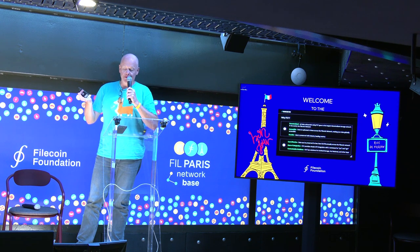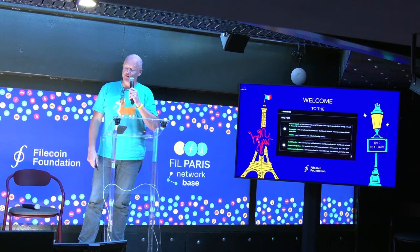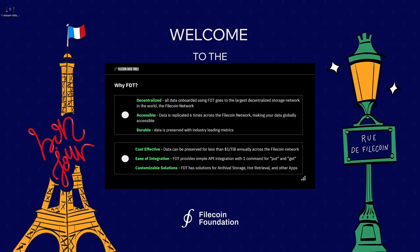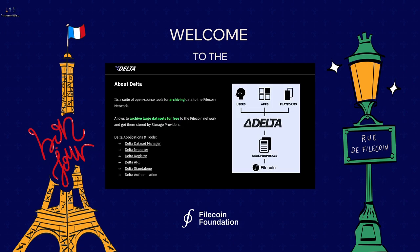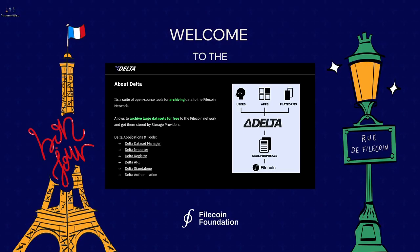Why would we go this route? We want a decentralized, accessible, durable system that's cost-effective and really easy to integrate. Delta — and that's my beautiful cat Darwin by the way — is a suite of open source tools specifically for archiving to the Filecoin network. It's the part of Estuary that we tore out that does all the really fast, efficient deal making.